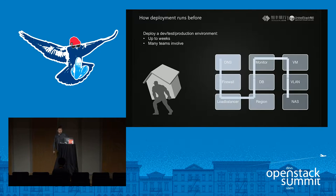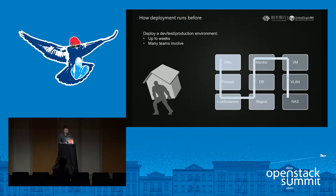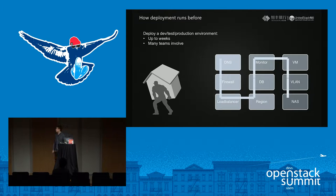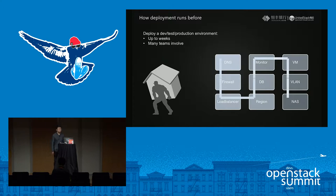Before we talk about OpenStack, let's look at how deployments worked in HongFong Bank before. It's a long journey because this is a banking service — every step needs to be checked and checked again. Before an application is ready for the public, we need to prepare the DNS name, add firewall policies, load balancer rules, monitor rules, set up the DB, and decide which region to deploy to. We also need to set up VMs including OS, middleware, runtime, configure VLANs, NAS, and other network and storage resources. Since some resources are limited and involve many teams, the process can take much longer than expected.